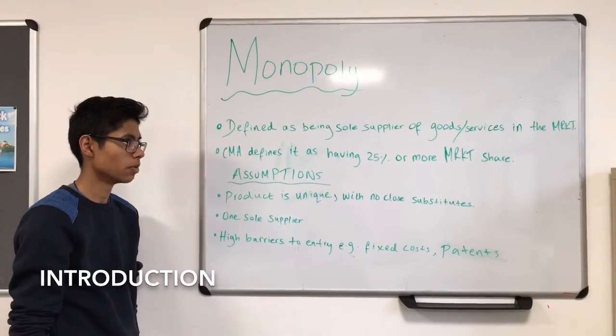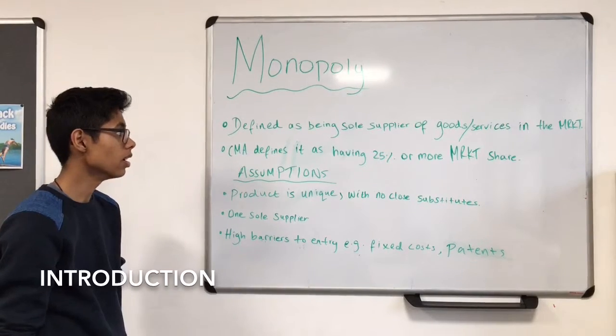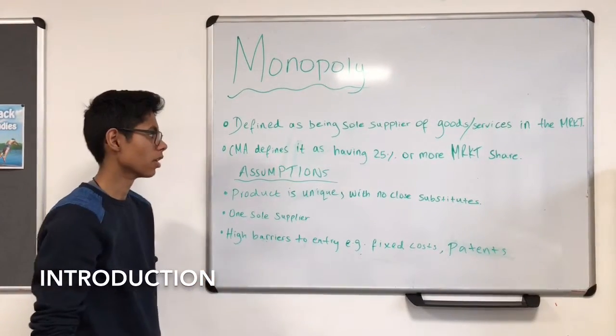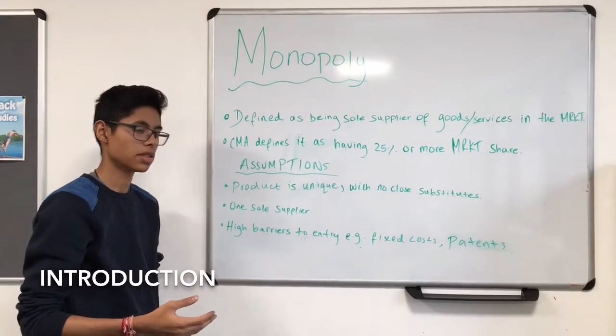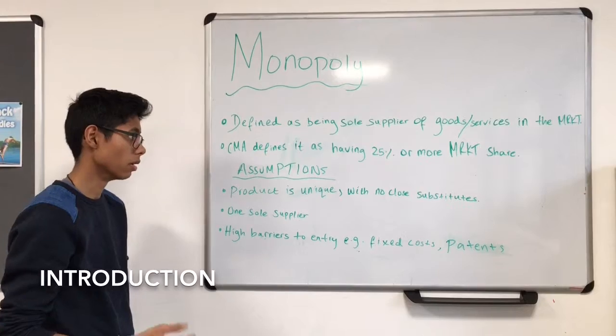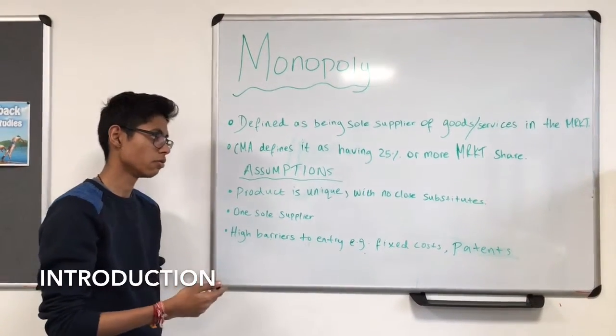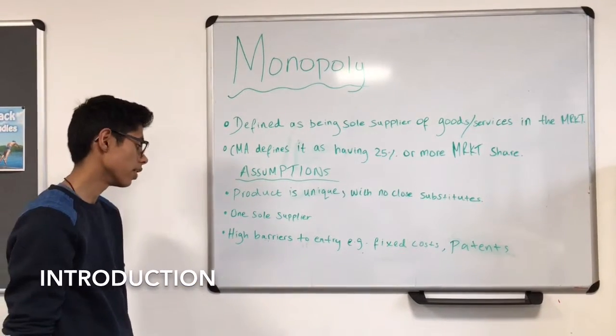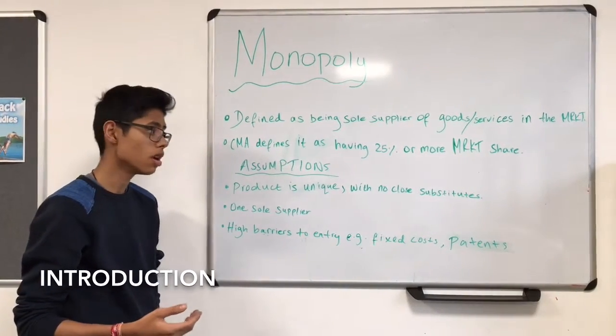A monopoly is where a firm dominates the market. An example of an extreme monopoly is a pure monopoly, defined as being a sole supplier of goods and services within the market. The Competition and Markets Authority defines this as having 25% or more market share. The main assumptions of a pure monopoly are that its products are unique with no close substitutes, it is the sole supplier within the market, and it has high barriers to entry such as fixed costs and legal patents.